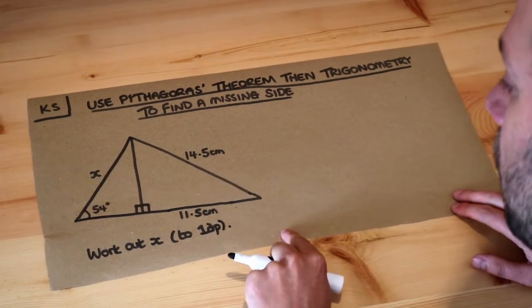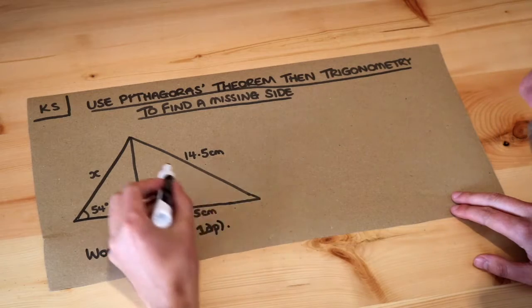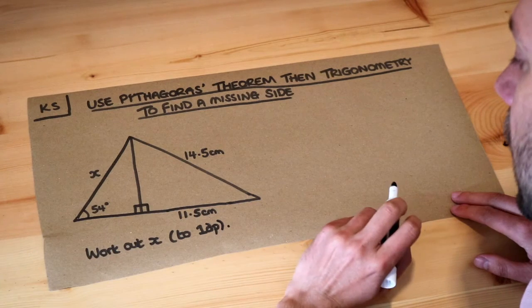So let's look at this problem. We're trying to find this side with length x and we've got two triangles here - this triangle over here and this triangle over here.